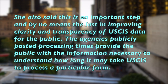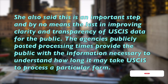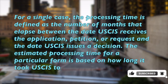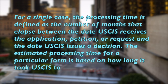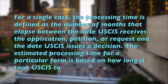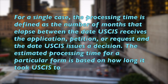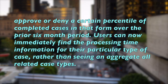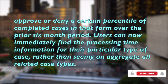The agency's publicly posted processing times provide the public with the information necessary to understand how long it may take USCIS to process a particular form. For a single case, the processing time is defined as the number of months that elapse between the date USCIS receives the application, petition, or request and the date USCIS issues a decision. The estimated processing time for a particular form is based on how long it took USCIS to approve or deny a certain percentile of completed cases in that form over the processing month period.